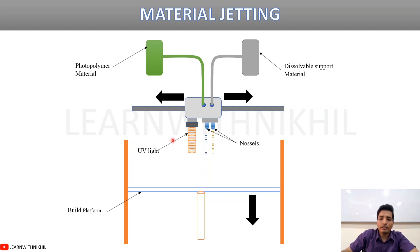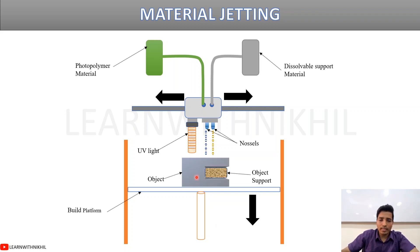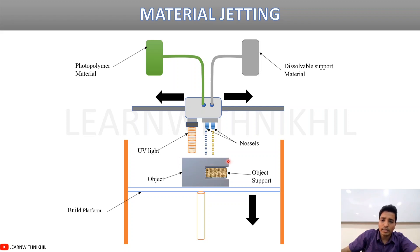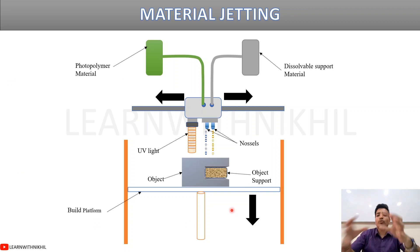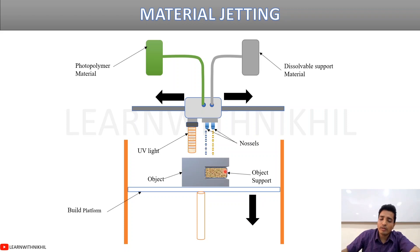The UV light comes continuously from the print head, curing the deposited material layer by layer. The support material fills in around the object, and once printing is complete, the entire part is dipped in water for a few minutes to a few hours. The dissolvable support material dissolves away, leaving only the finished hardened object.